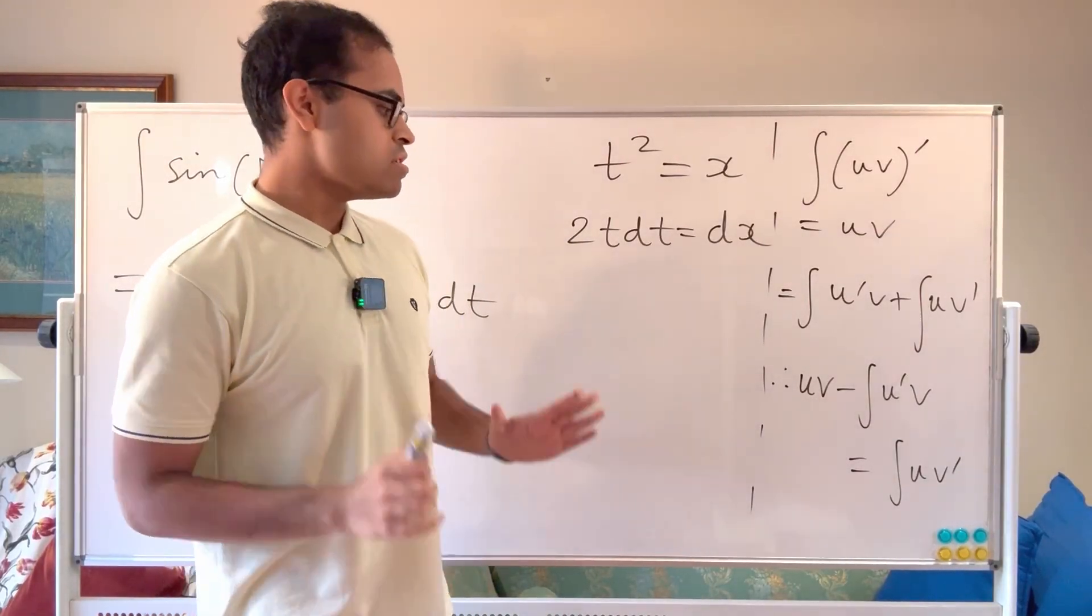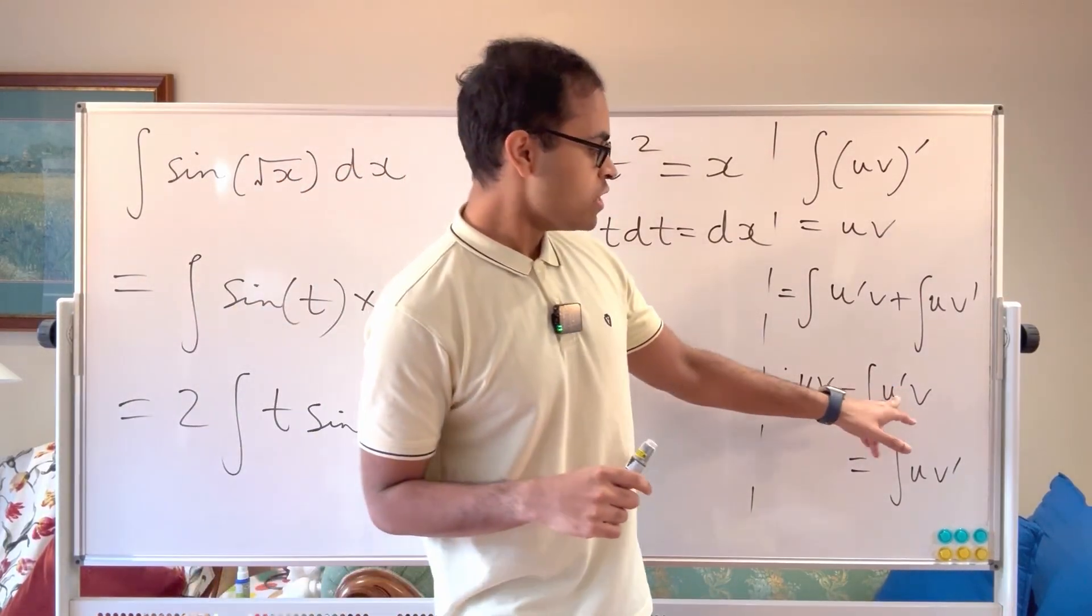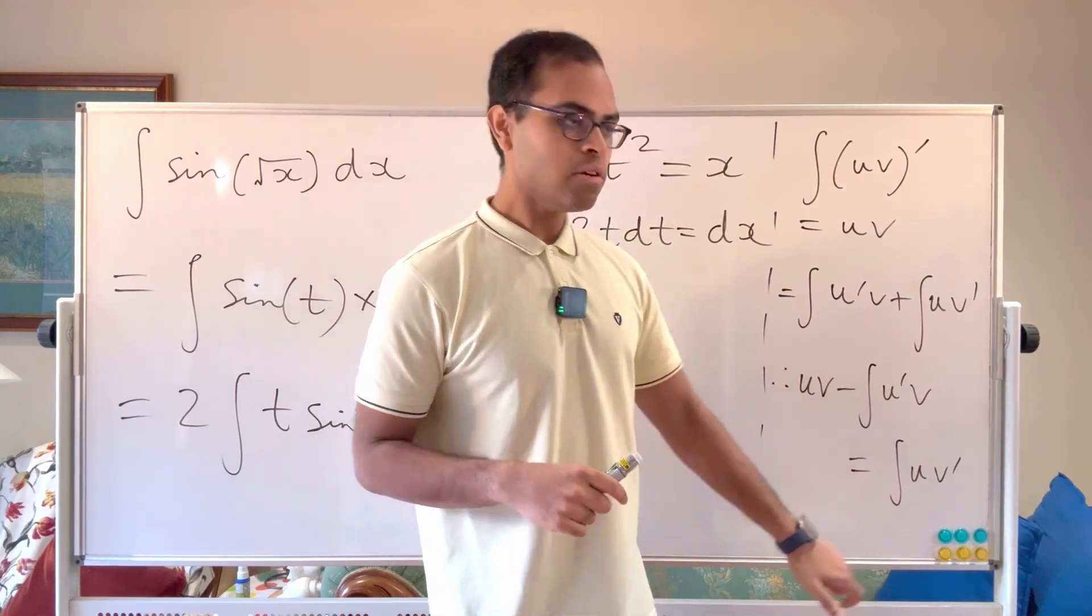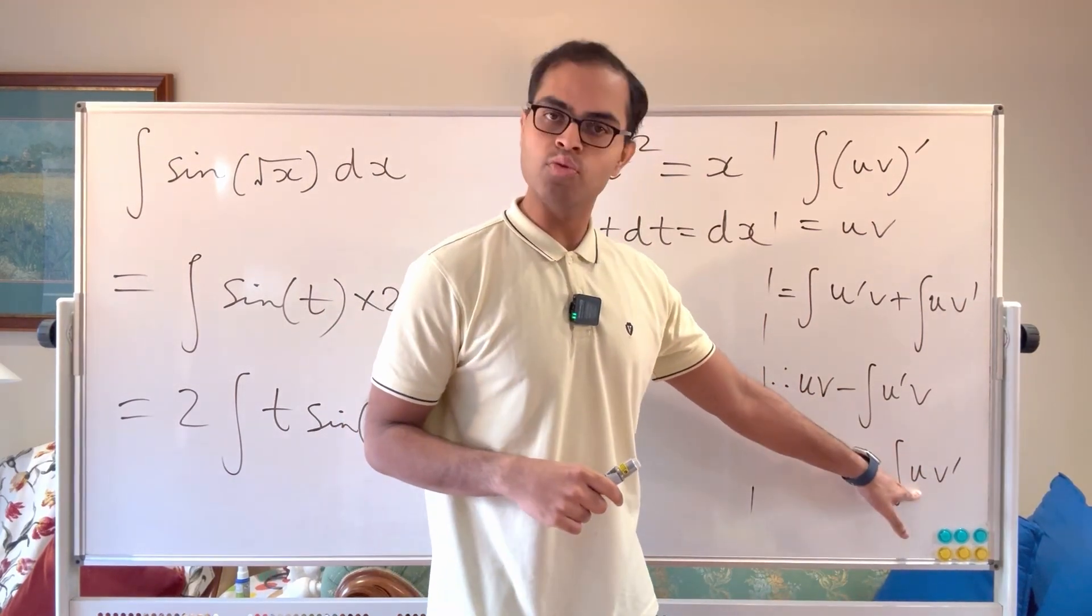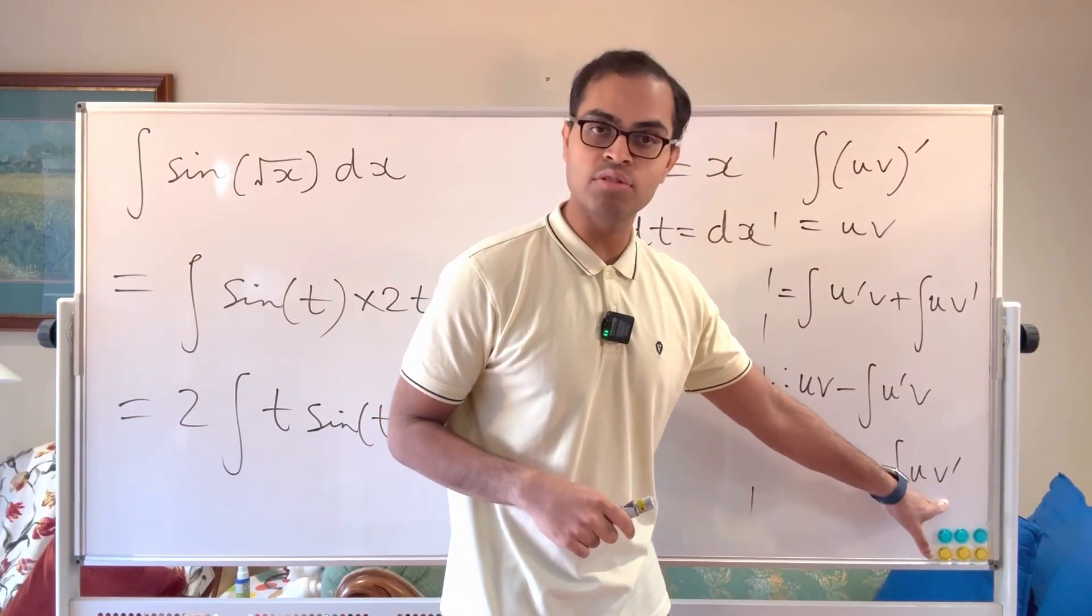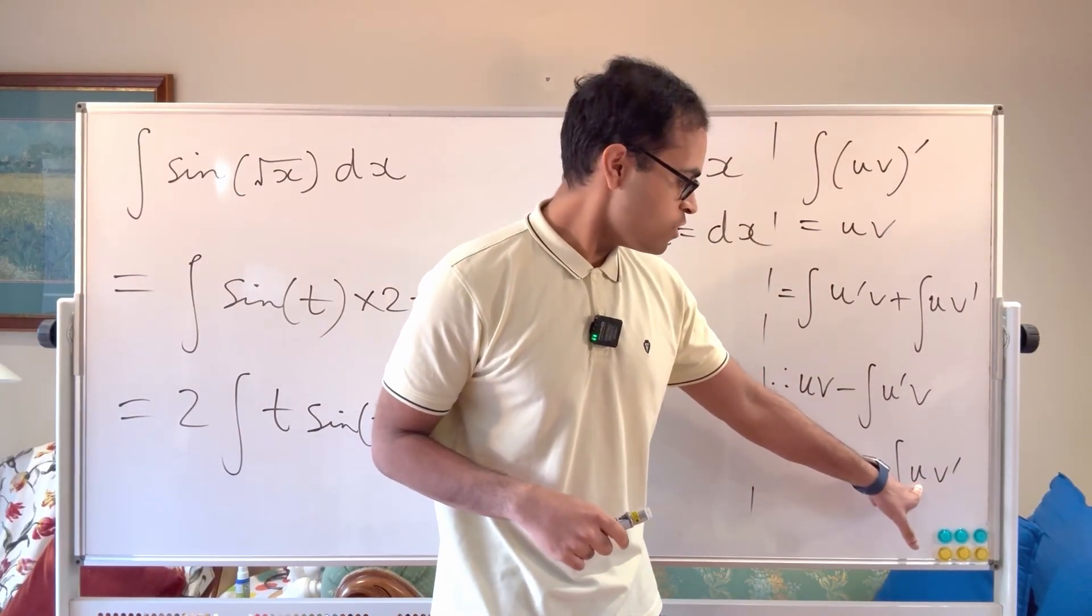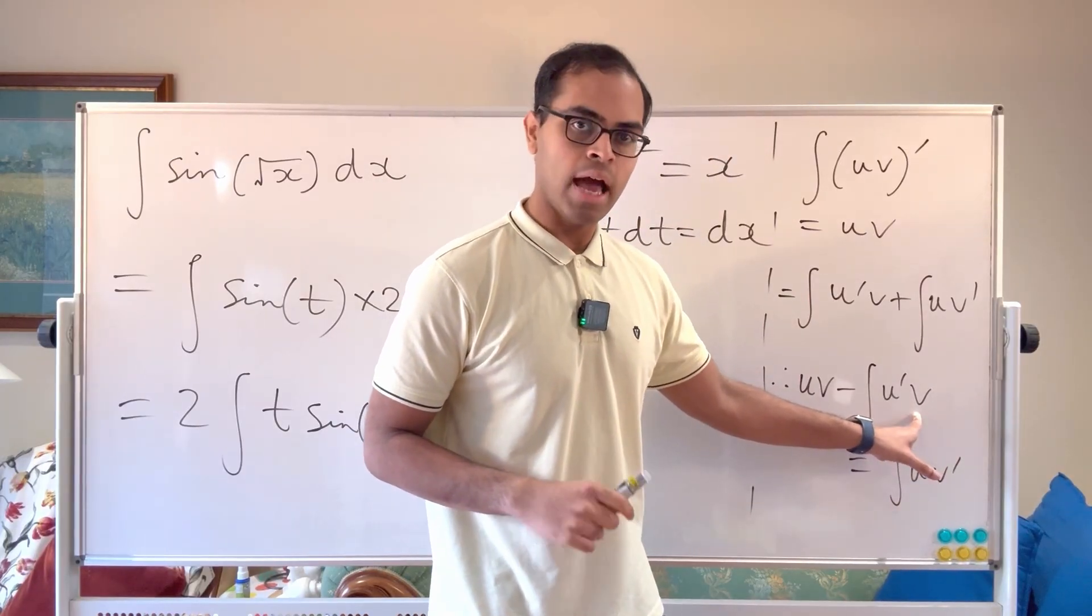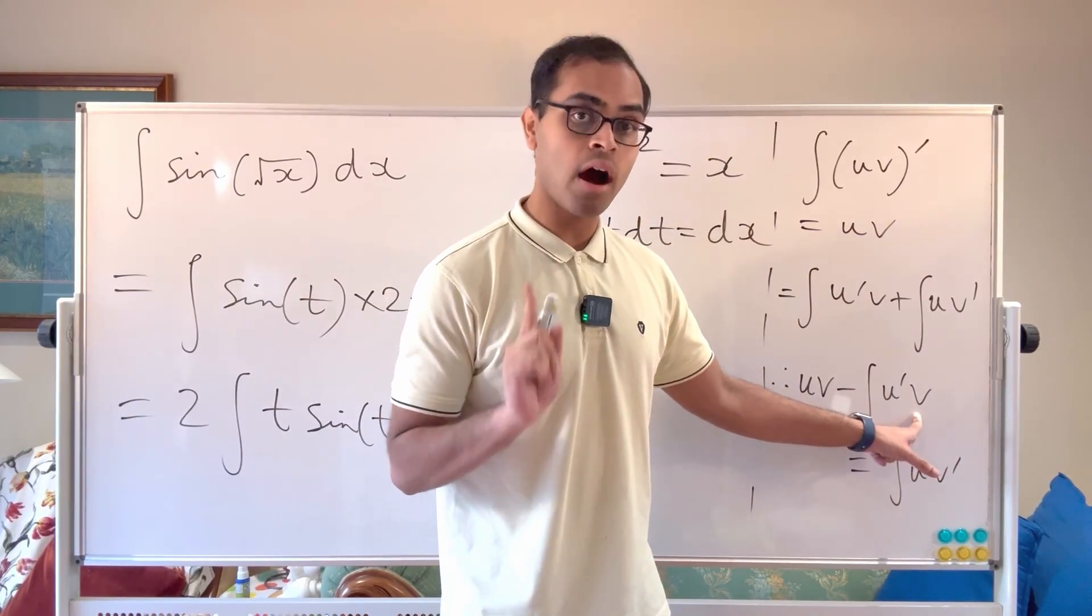Now the way I like to intuitively think about this is if we know this integral, we're going to know this integral. And what is the difference between this one and this one? In this integral, we've got two parts u and v prime, we're going to differentiate the u and we're going to integrate the v prime to get v. And that's hopefully going to simplify our integral.